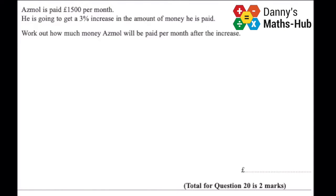So Asmol is paid $1,500 per month. He's going to get a 3% increase in the amount of money he is paid. Work out the amount of money Asmol will be paid per month after the increase.